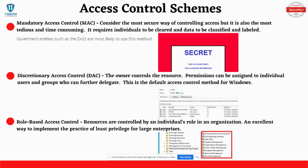Discretionary access control is the default access control used by Windows. In DAC, the owner of the data determines who is granted access. For example, when you create a folder on your desktop and want to share it, you right-click, go to share settings, and determine who gets access to that shared folder — because you're the owner, that is discretionary access control.